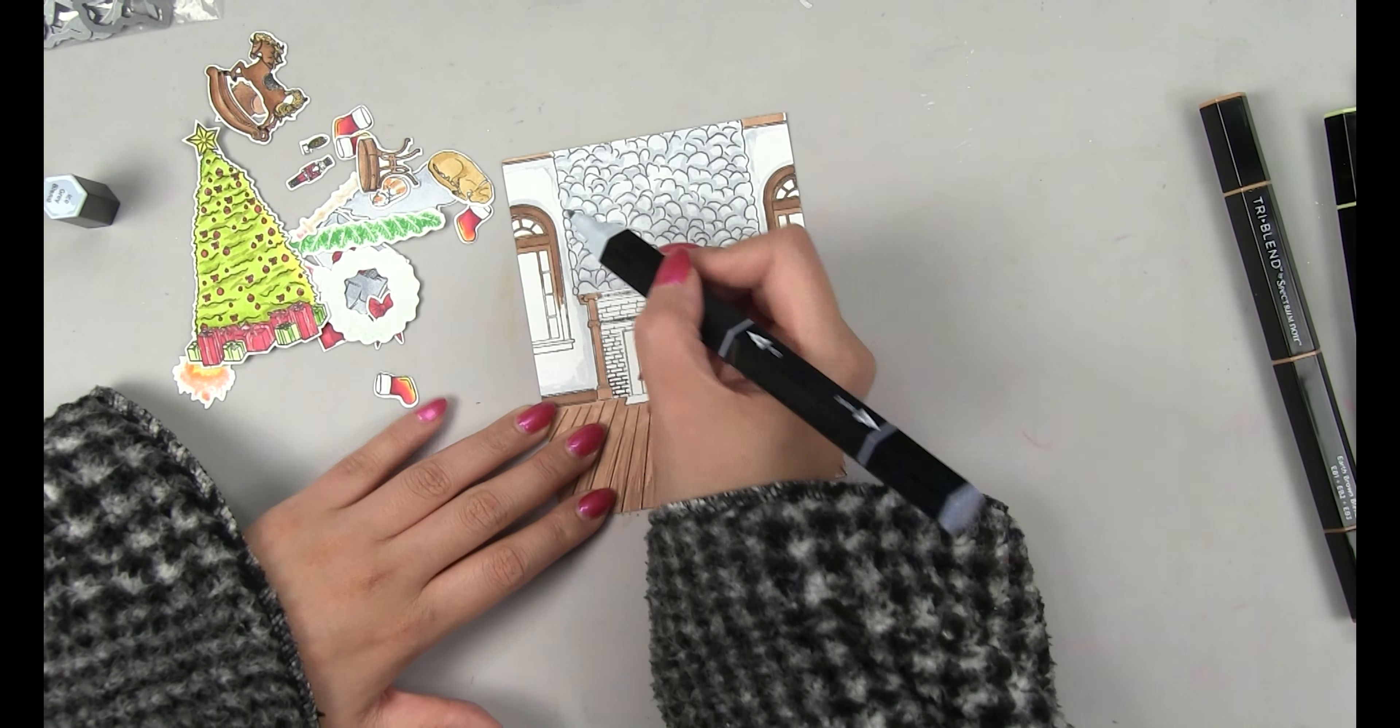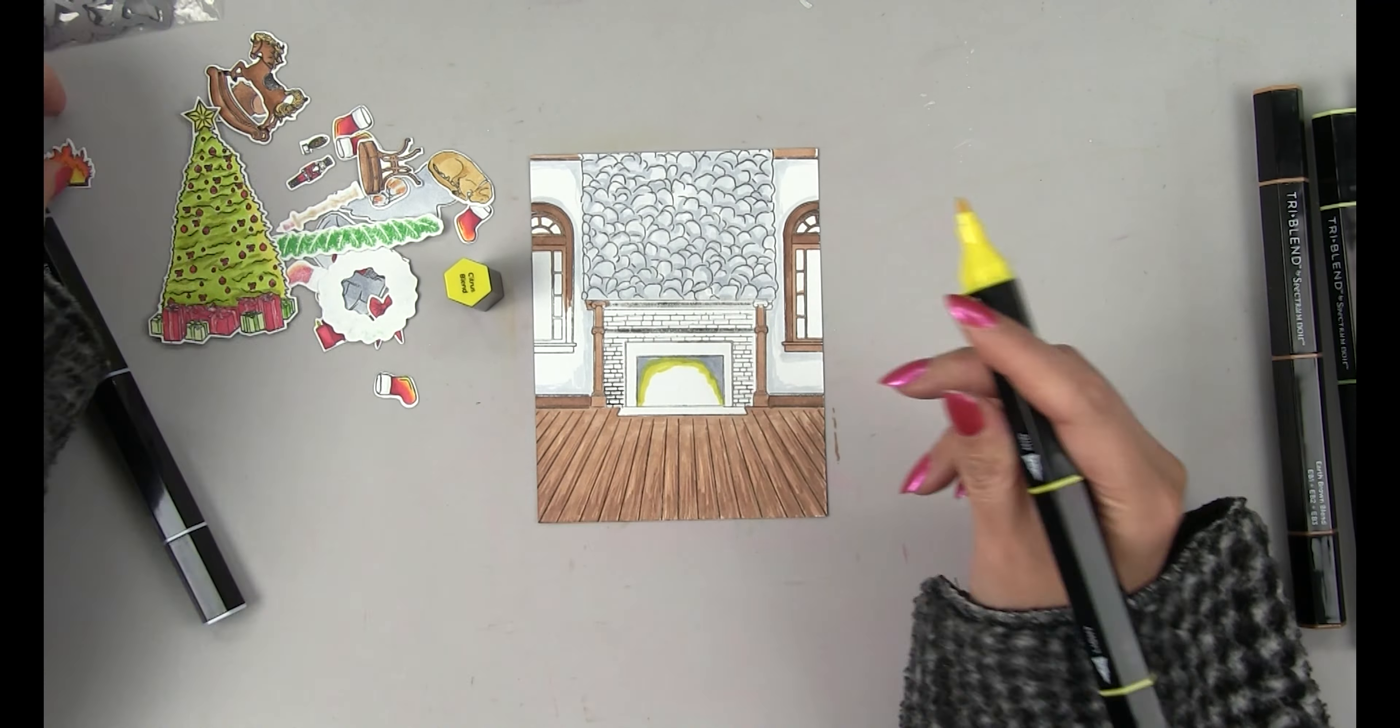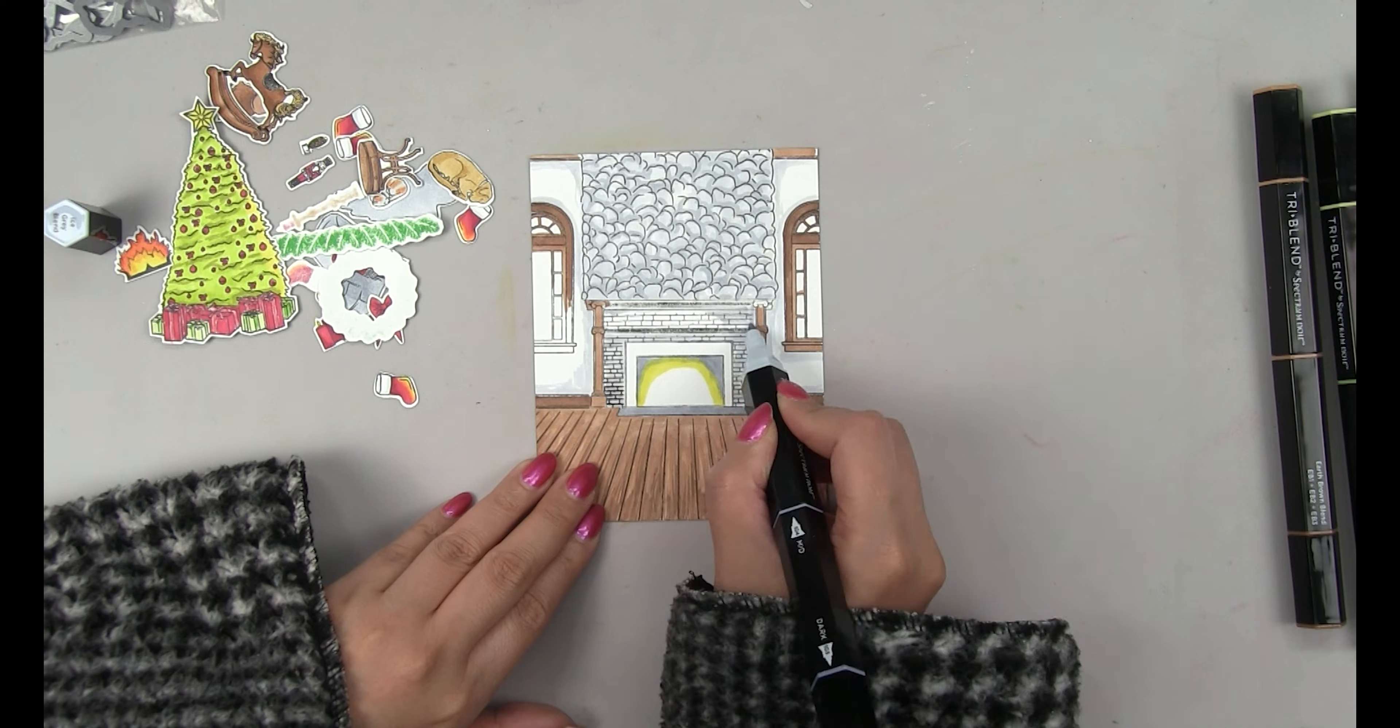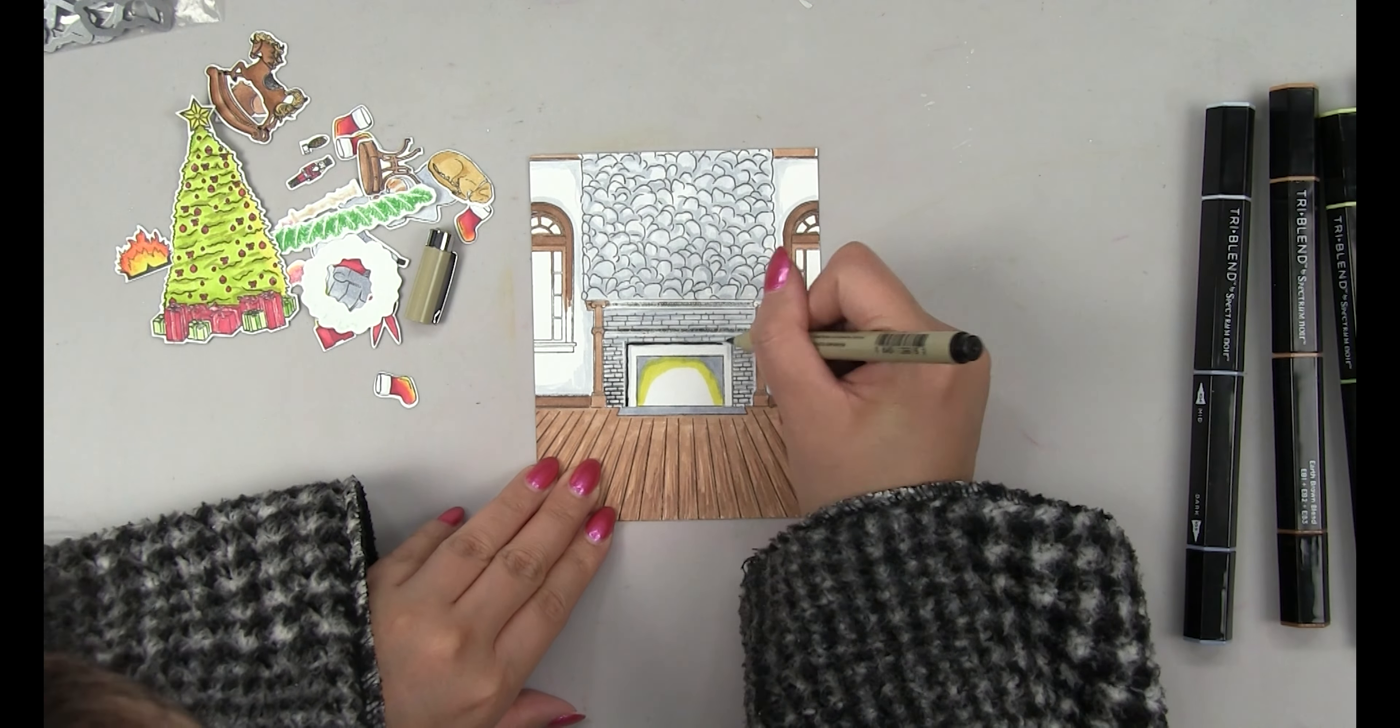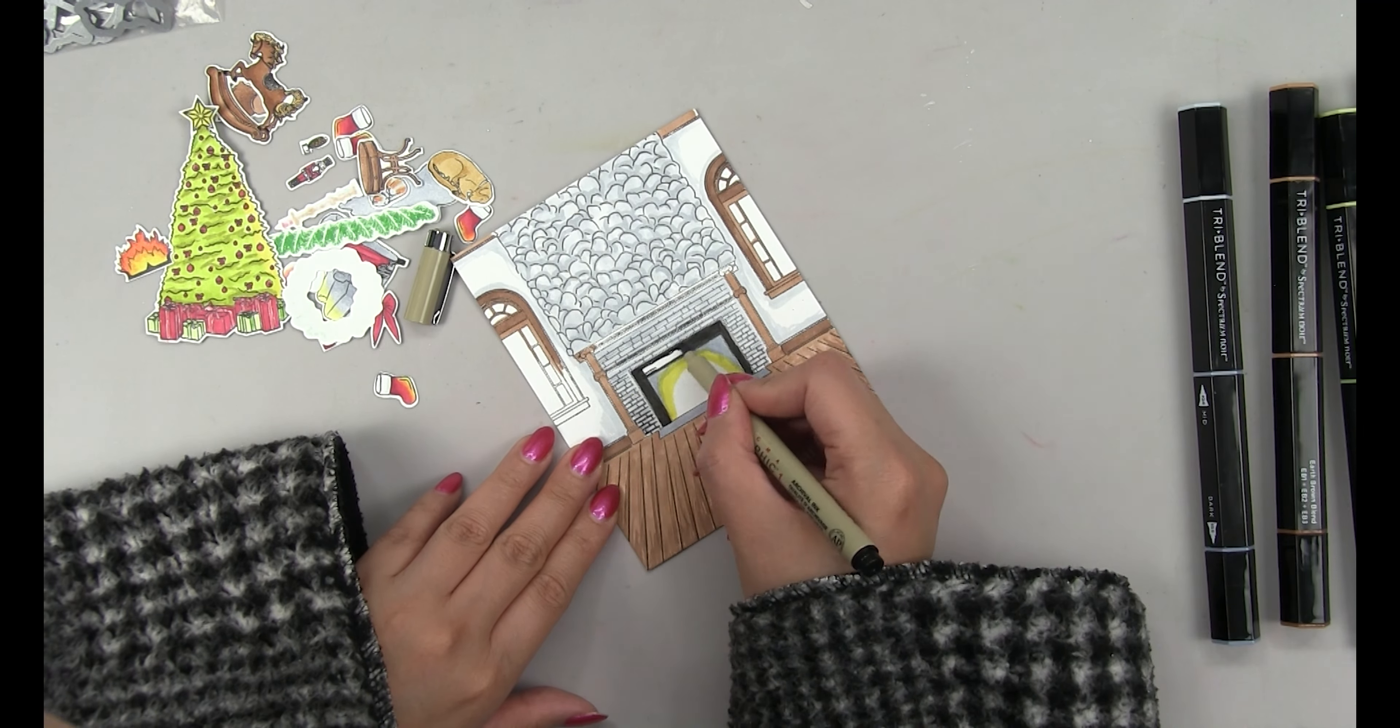I added some gray shading to the walls in the background and under the windows and then I added some gray and yellow inside the fireplace because again the yellow represents the glow from the fire. I add some more gray and mid-tone gray coloring to the brick of the fireplace and then I used a black pen to add some coloring to the paneling on the fireplace.